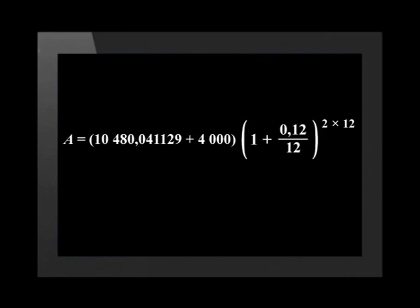The money stayed in the account for two more years at this interest rate and grew to 10,480.41129. In the last part of the calculation, 4,000 rand is added to the investment. The investment matures for another two years and comes to a total of 18,386.27994 after the seven years. Usually at this stage we would round off our answer to two decimal places, but let's leave this so we can compare the long method answer to the shorter method answer.